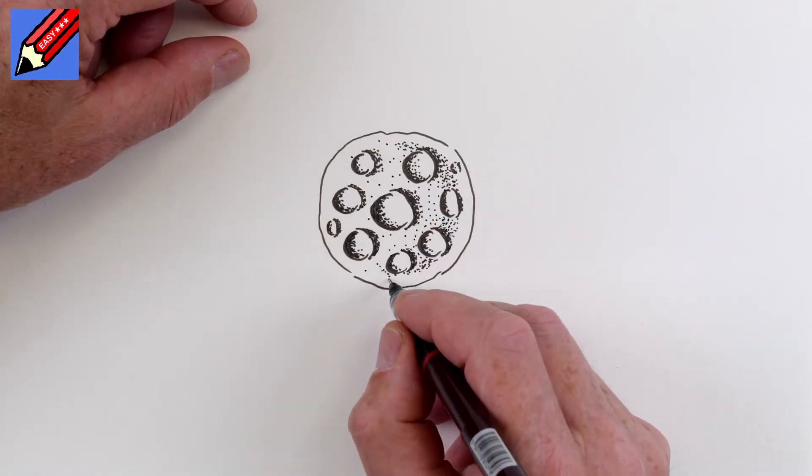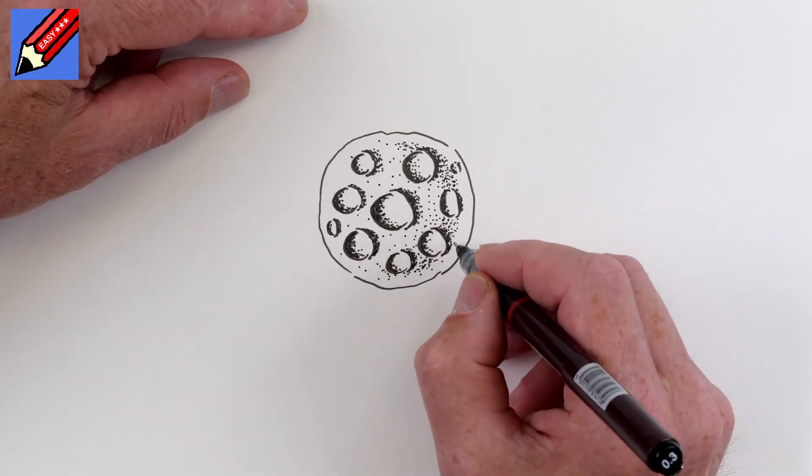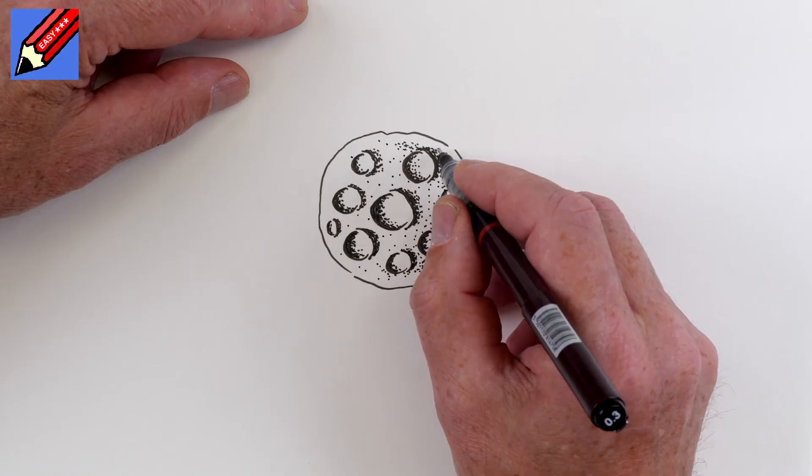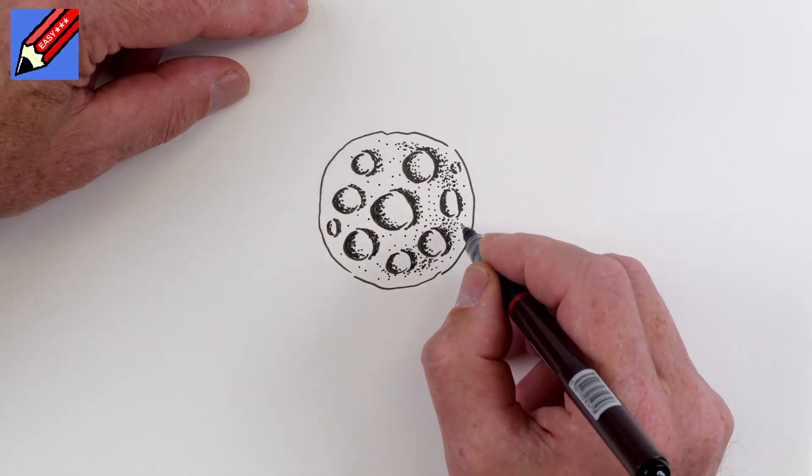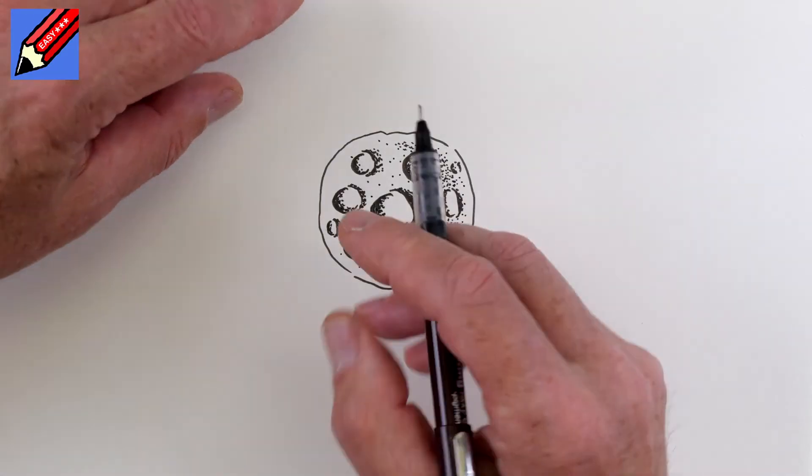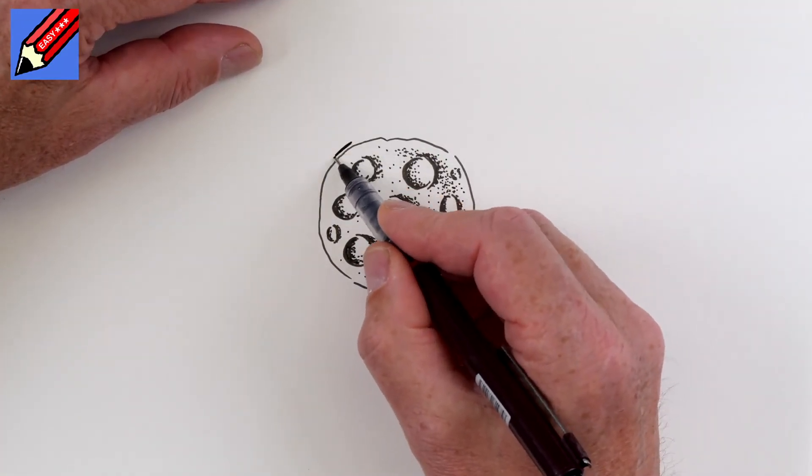So those dots are just giving a bit of texture to the whole thing. And we'll have one or two around here. But we really want this edge to be light. It's called sort of ambient light. It's kind of reflected back from other things. And then we can sort of finish up the whole thing